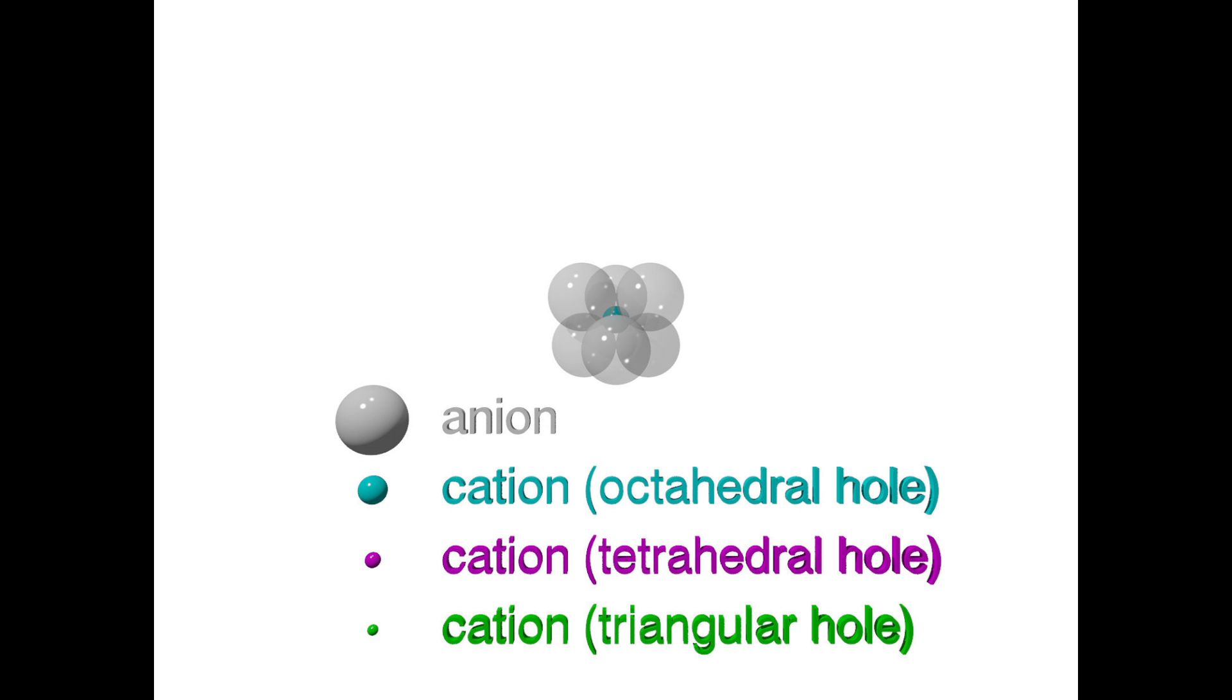In summary, two types of holes are created by close packing in three dimensions: octahedral holes and tetrahedral holes. Both of these are larger than the triangular holes that exist in a monolayer or a two-dimensional close-packed structure.